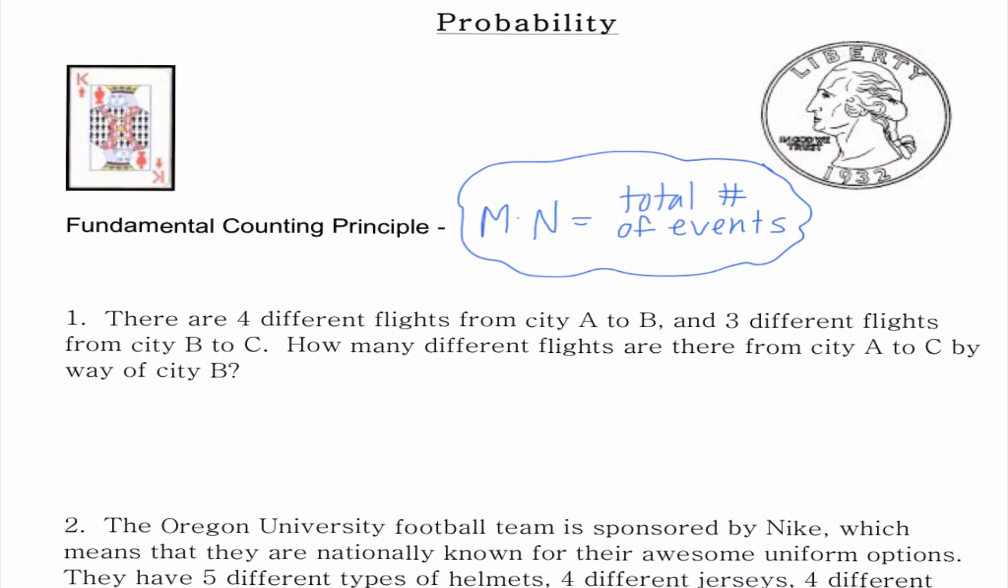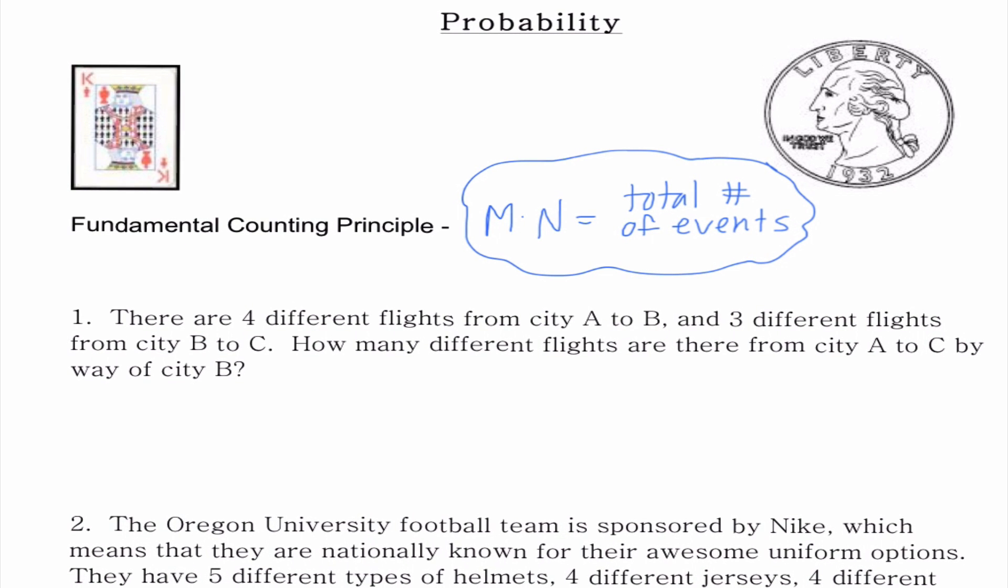If we look at number one, this is a classic problem. It says there are four different flights from City A to City B, and three different flights from City B to City C. How many different flights are there from City A to C by way of City B? We need to think of how many options are there from A to B times how many options are there from B to C. There are four different flights from A to B, so I'm going to write four in. There are three different flights from City B to City C, so I'm going to go ahead and write three. Four times three is 12. So altogether, there would be 12 different options that you could possibly take.